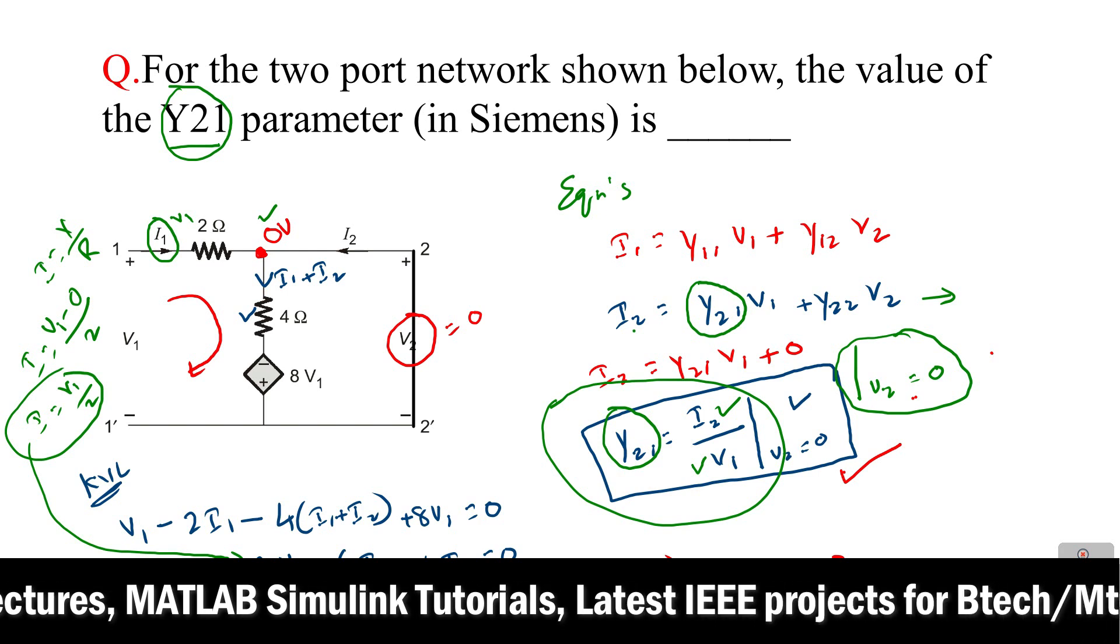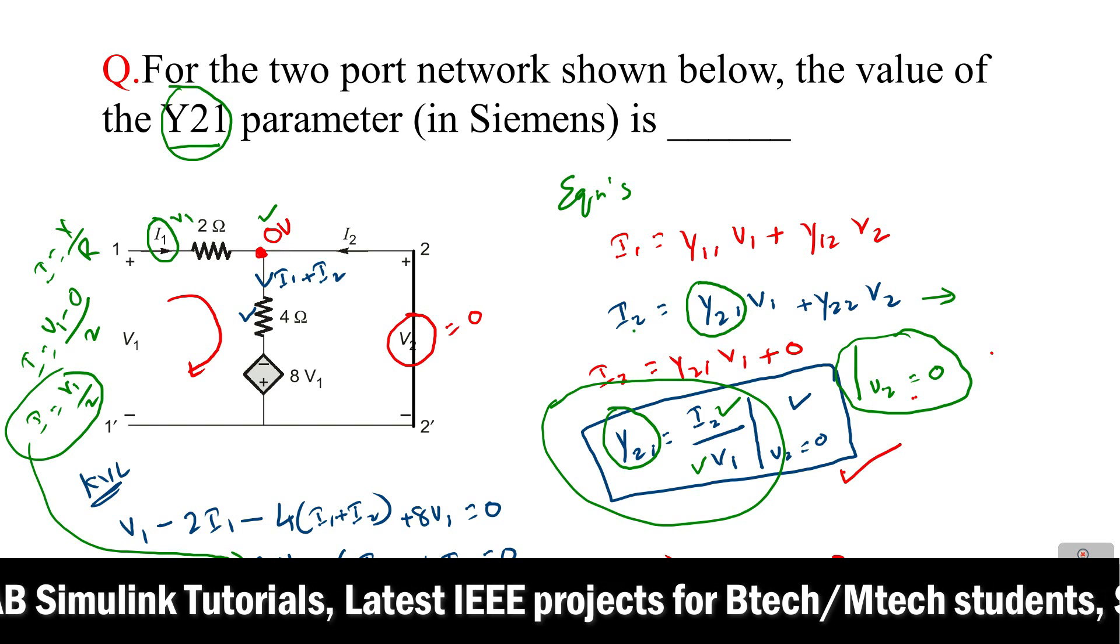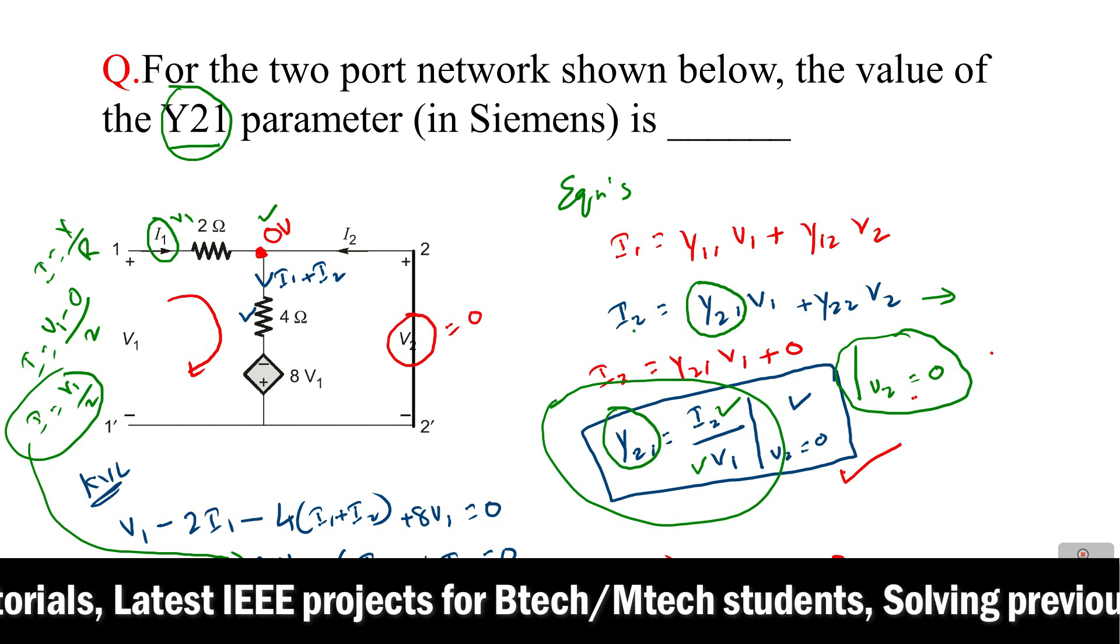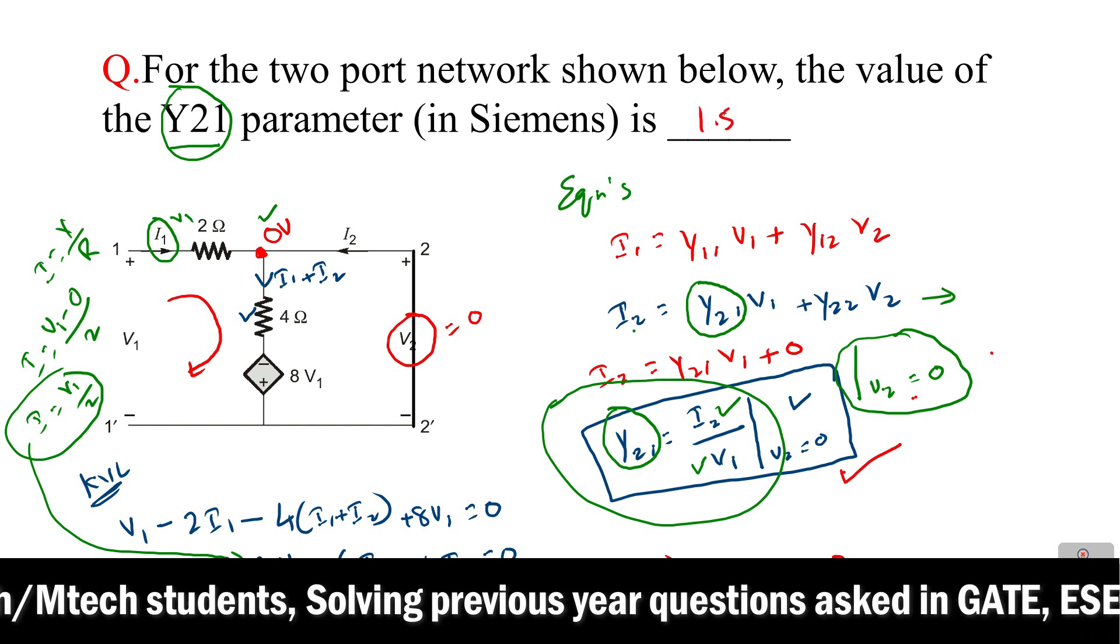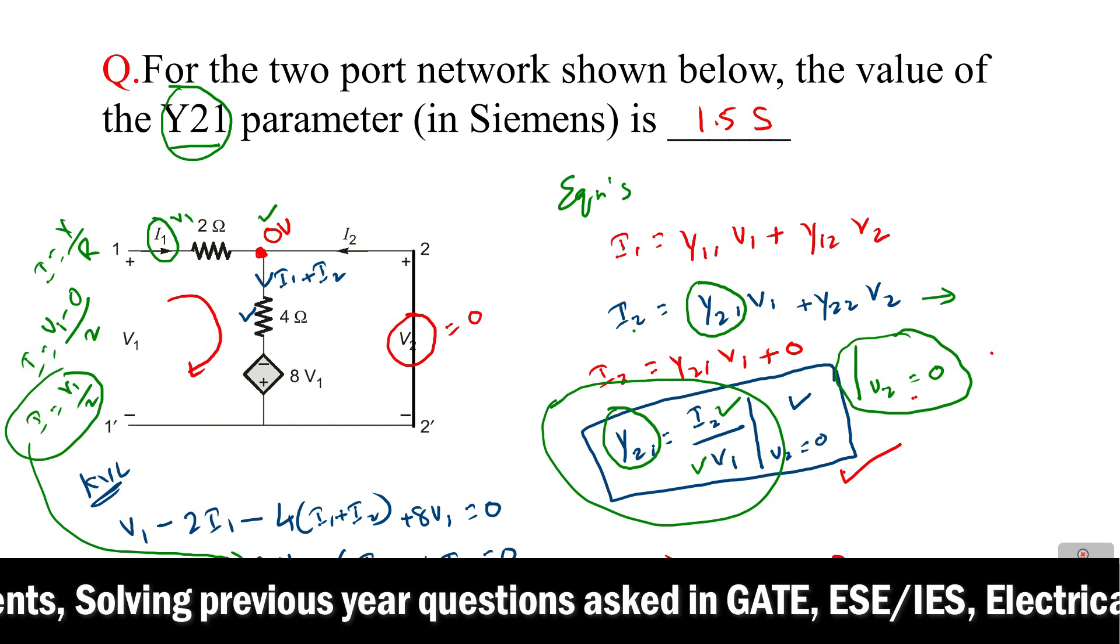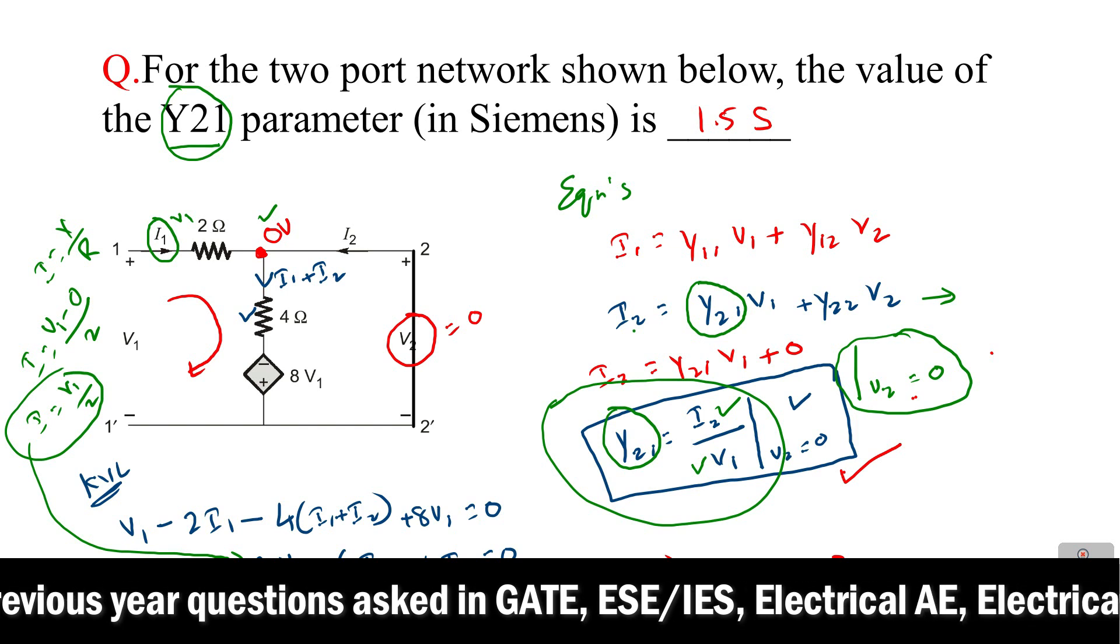That's why it is also known as short-circuit admittance parameters. And here the answer is 1.5 siemens, and this question is asked in 2024 GATE examination.